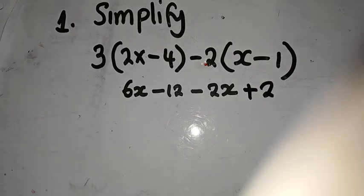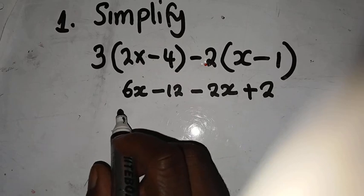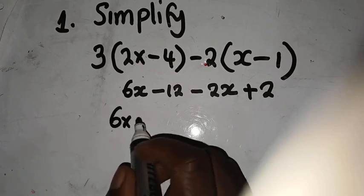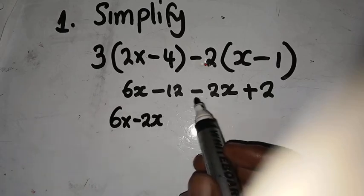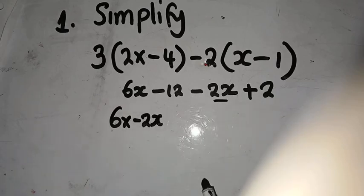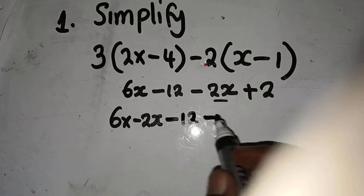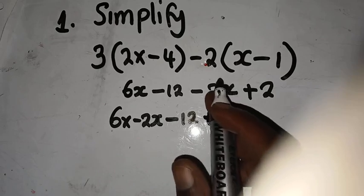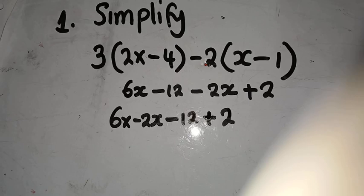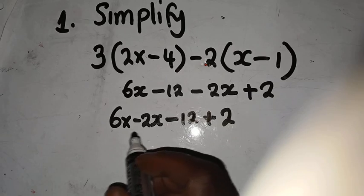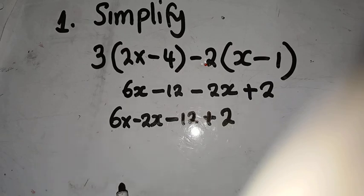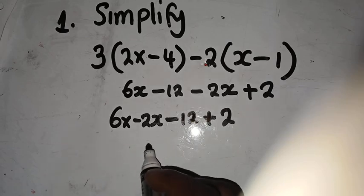At this point we need to put the like terms together. We arrange the like terms: 6x minus 2x — this minus has to move with its own sign — then minus 12, plus 2. Now, 6x minus 2x is going to give us 4x.